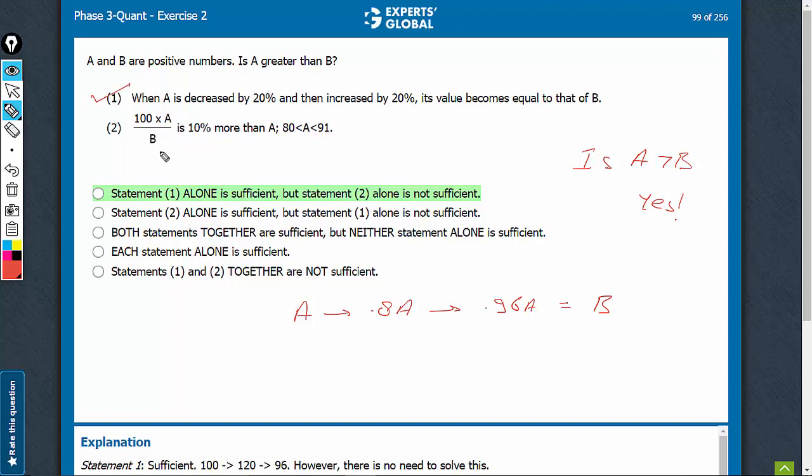Look at statement 2, 100A upon B is equal to 1.1A. So, we know B is equal to 100 upon 1.1,